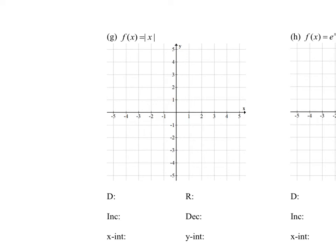We move on to the next function, letter G, which is f of x equals the absolute value of x. What is the absolute value of x? Absolute value of x comes from the distance function — it's asking the magnitude or the distance from 0.